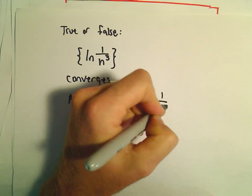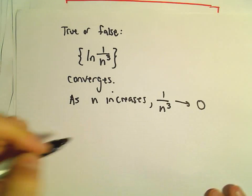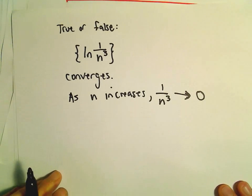Certainly 1 over n to the 3rd, this is going to approach 0. So as n increases, 1 over n to the 3rd will approach 0.